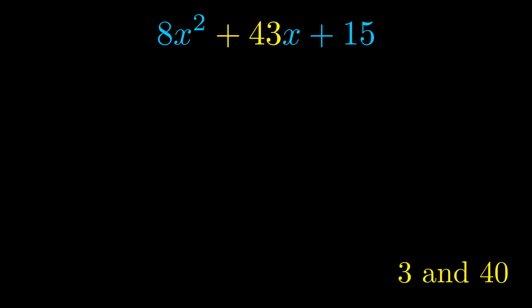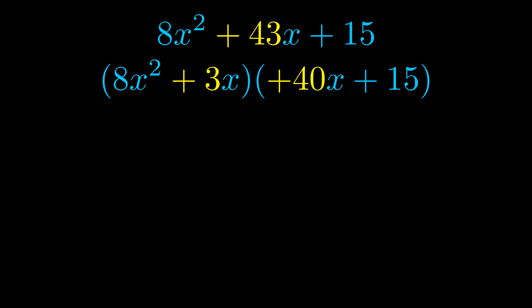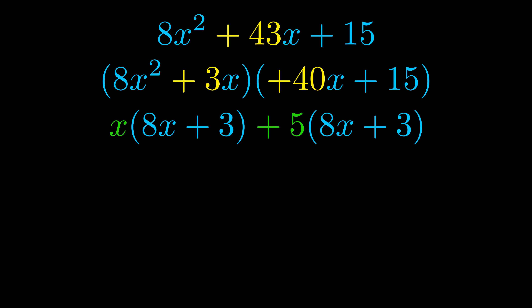Once we've done this, we go ahead and put parentheses around the first term and the last term, so that we can take the greatest common factor out of both terms. We can see the greatest common factor is now outside in green.